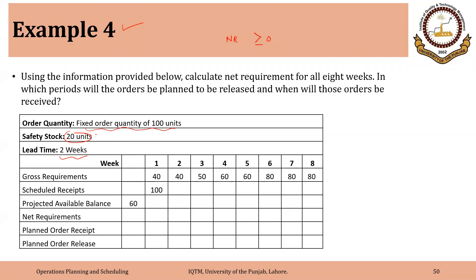We have to maintain a safety stock of 20. So whenever we are going for a planned order release, we have to consider the safety stock as well. That is the main point — we have to maintain a safety stock of 20 units in this case. That is the basic difference and we will see how we will incorporate that.